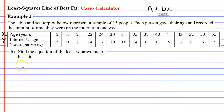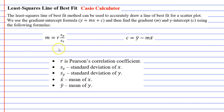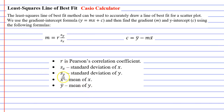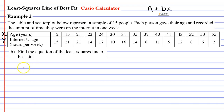We're going to move on to question B. This is the harder question: find the equation of the least squares line of best fit. This is where we need to go back to the screen with our formulas and some symbols that might feel quite new. We have r for Pearson's correlation coefficient, Sx which is the standard deviation of x, Sy the standard deviation of y, x-bar the mean of x, and y-bar the mean of y.